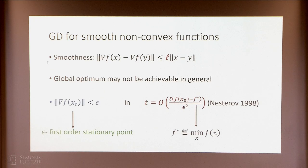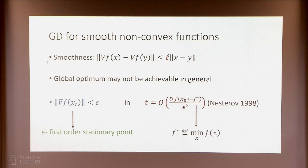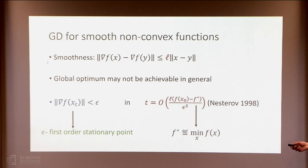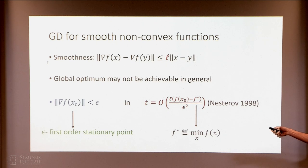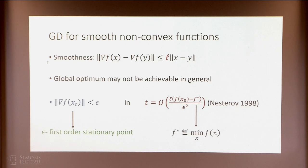For the class of smooth functions, where smoothness means the gradient does not change too fast, or the Hessian is upper bounded by L, it is well known that gradient descent converges to points where the gradient value is close to zero. After roughly one over epsilon squared iterations, gradient descent converges to a point where the gradient is less than epsilon. Points where the gradient is smaller than epsilon are called epsilon first-order stationary points.